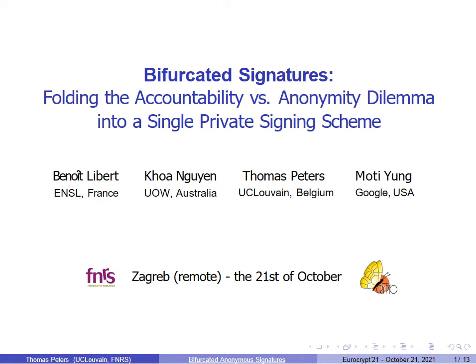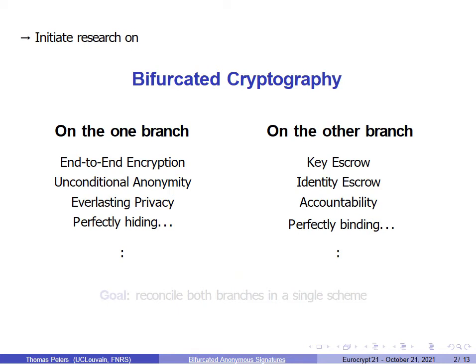In this talk, I'm going to show that we do not have to choose once and for all between either a strong notion of accountability or statistical anonymity in a single private signing scheme. More generally, our goal is to initiate research on bifurcated cryptography. In more than two decades, cryptographers built more and more advanced protocols, but they can usually be divided into two conflicting branches.